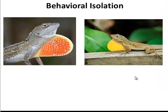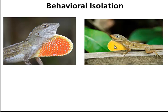Behavioral isolation is also prezygotic. These are two different lizard species because their courtship rituals are different. The way this one bobs its head to attract mates is different than the way this species bobs its head. You can also see a difference in the color of their dewlap, and females of each species find their own type of dewlap attractive.